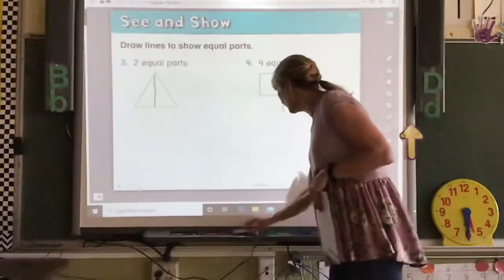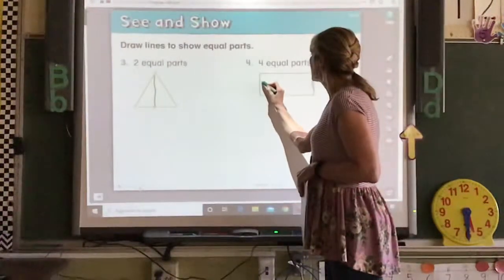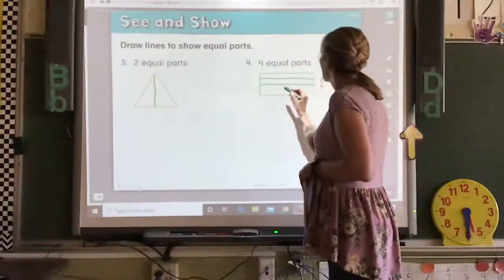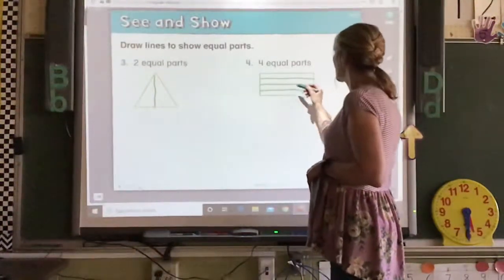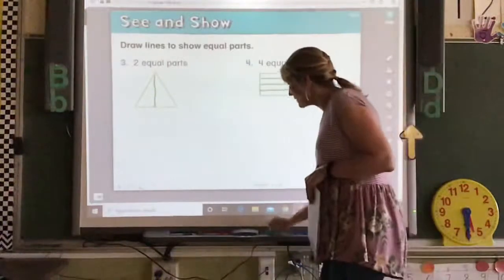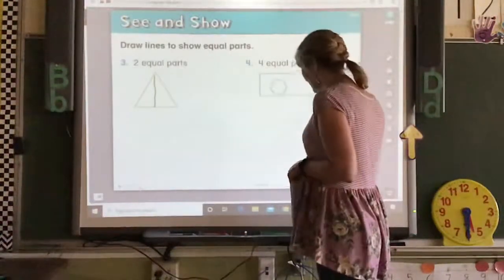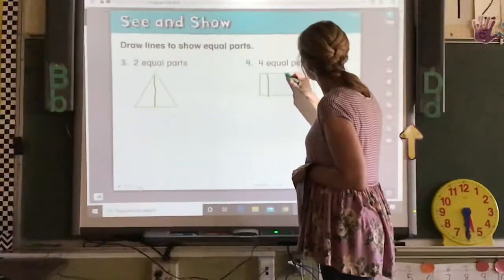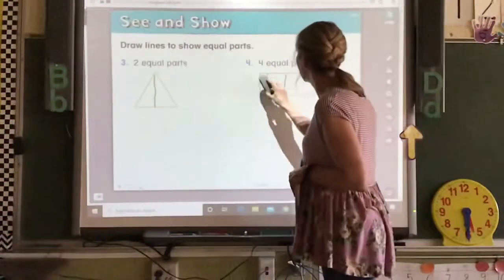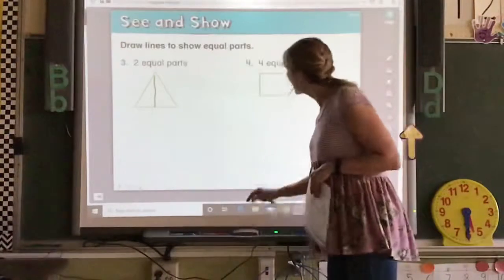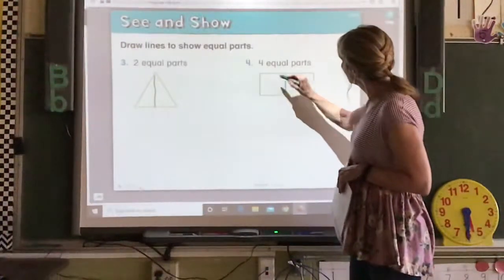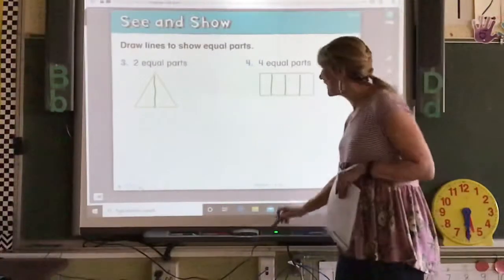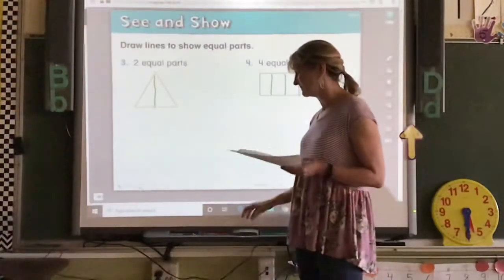We could go here and here to make four equal parts. You could do lines. You could go like this. And those are the same size. You could do lines up and down. So you're going to divide it in the middle first. You're not going to get it very even. So you want to put it in the middle. And then four equal parts. So that one can be done a lot of different ways.